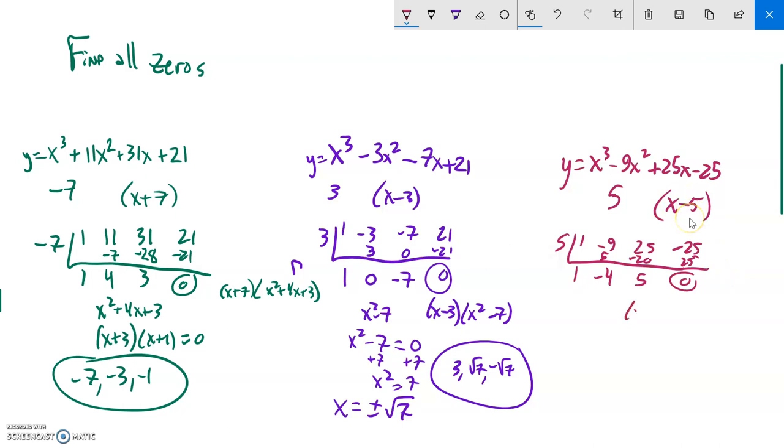Again, what I did was I divided by this x minus five. And what it left was, since this was a cubic, it scales it one down to a quadratic: one x squared minus four x plus five. And so now I have this to deal with, this x squared minus four x plus five. And what I could try to do is factor that, but I'm not going to be able to. So I'm going to have to use quadratic formula.